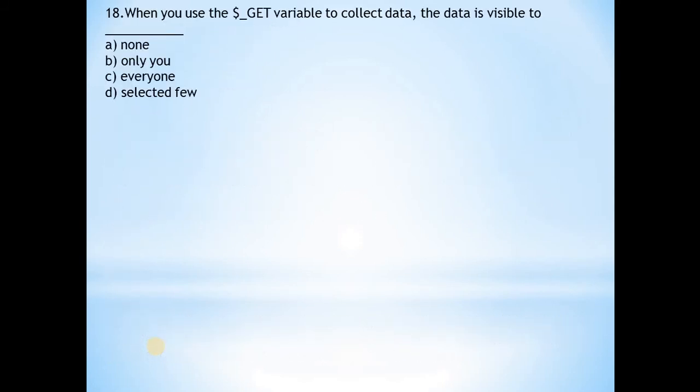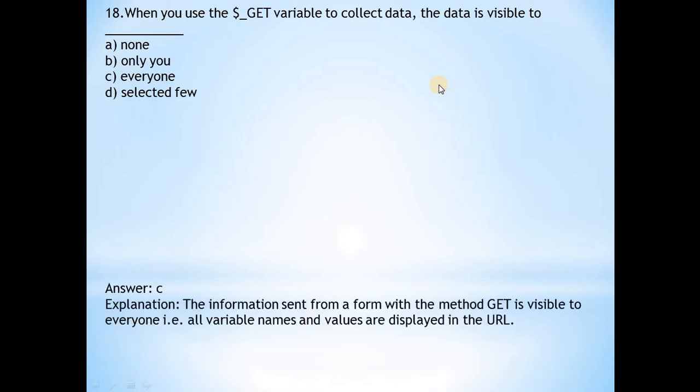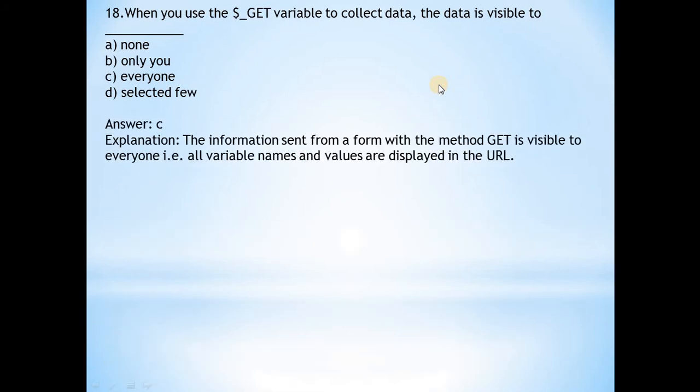Question 18: When you use the $_GET variable to collect data, the data is visible to... Answer is c, everyone. The information sent from a form with the method GET is visible to everyone. All variable names and values are displayed in the URL.